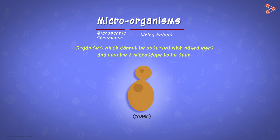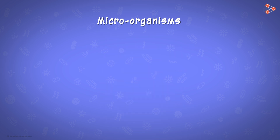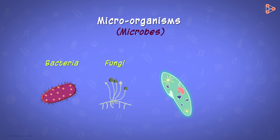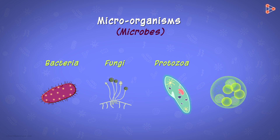These tiny creatures come in various shapes, forms, and structures. For studying them, a proper categorization is really necessary. Thus, we classify these microorganisms — simply referred to as microbes — into four major classes: bacteria, fungi, protozoa, and algae.